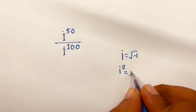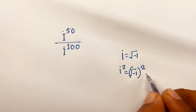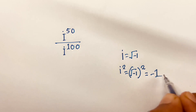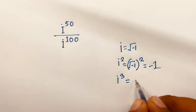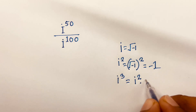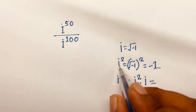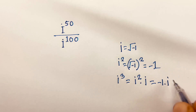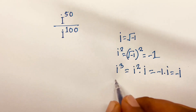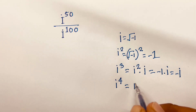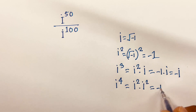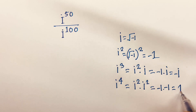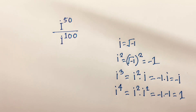i squared equals (√(-1))² = -1. i to the power 3 equals i squared times i, which is -1 times i, so it equals -i. And i to the power 4 equals i squared times i squared, which is (-1) times (-1), so it equals positive 1.